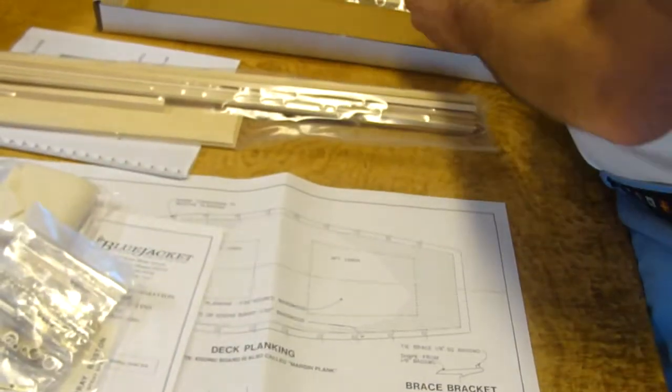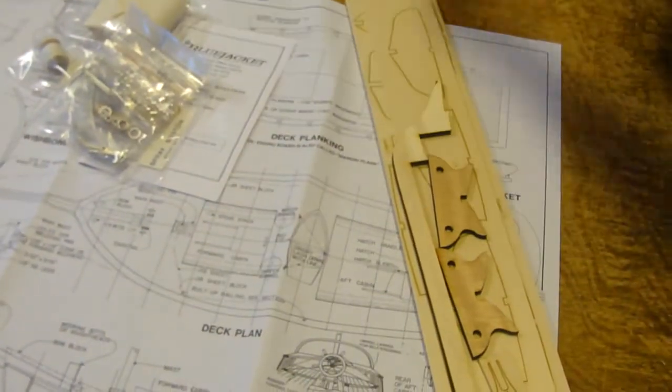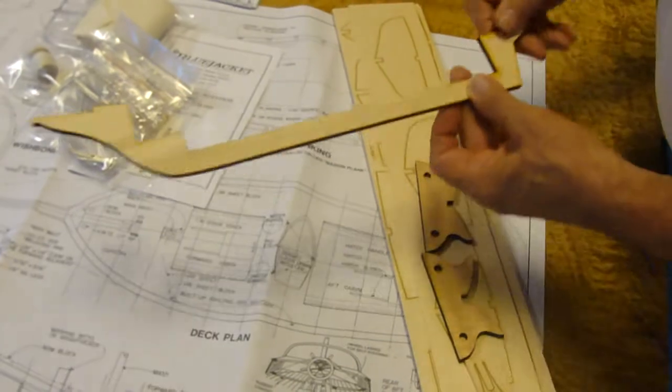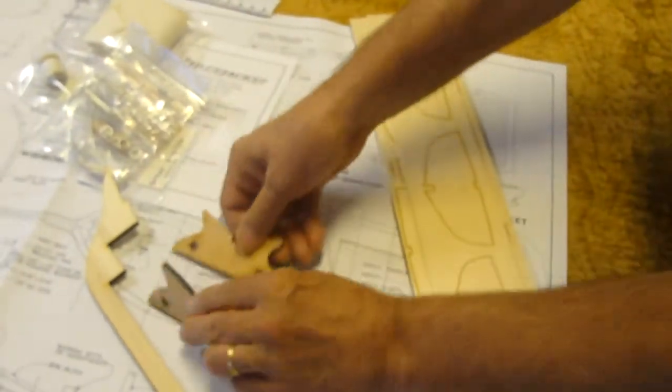And finally, there is the package of laser-cut wood. This includes, of course, your keel, a mounting cradle, gaff jaws.